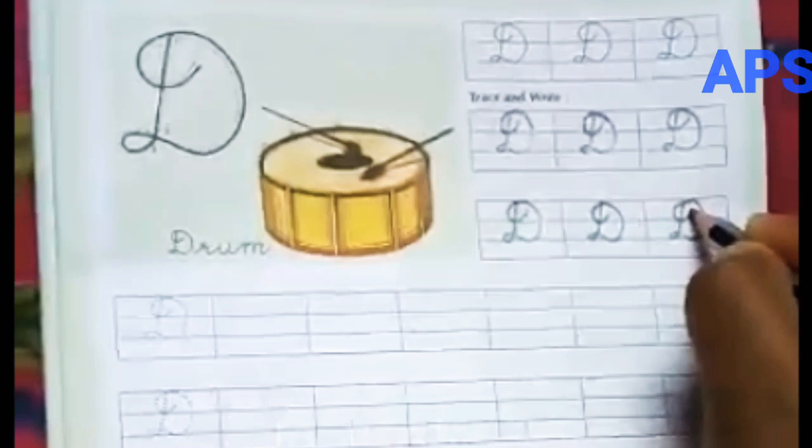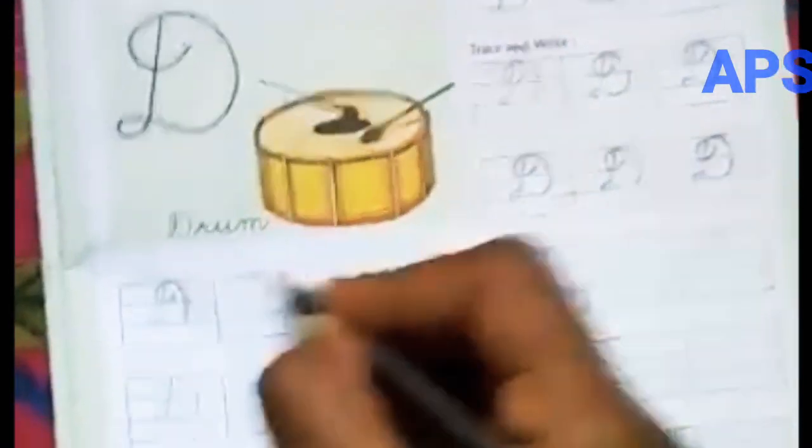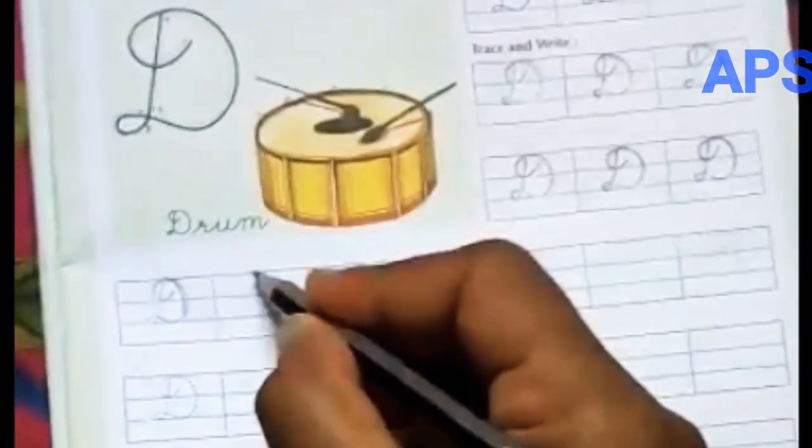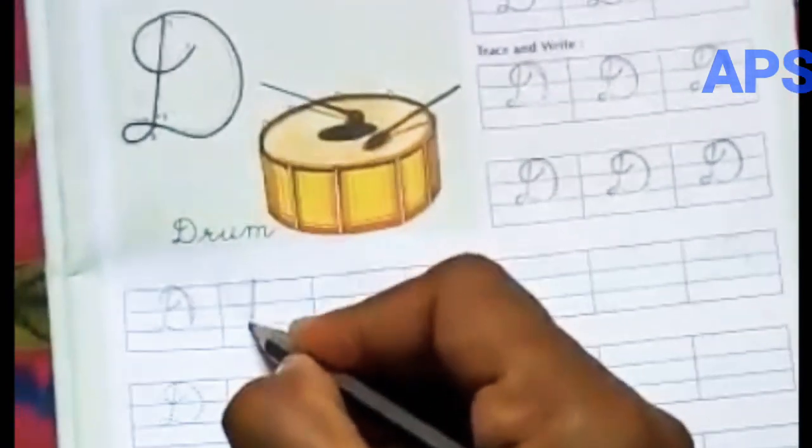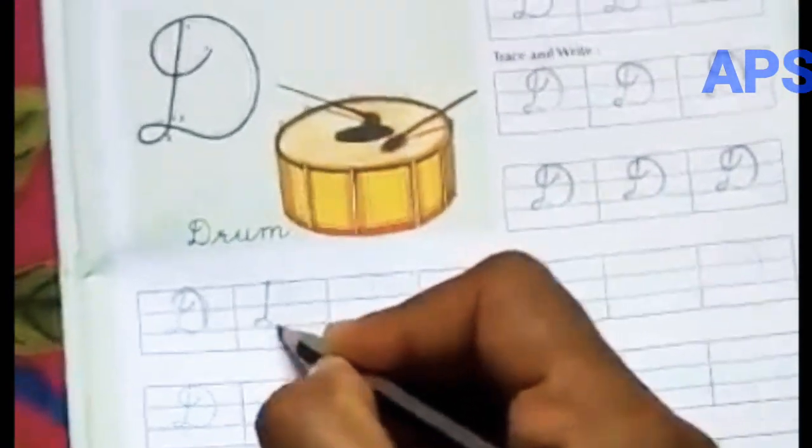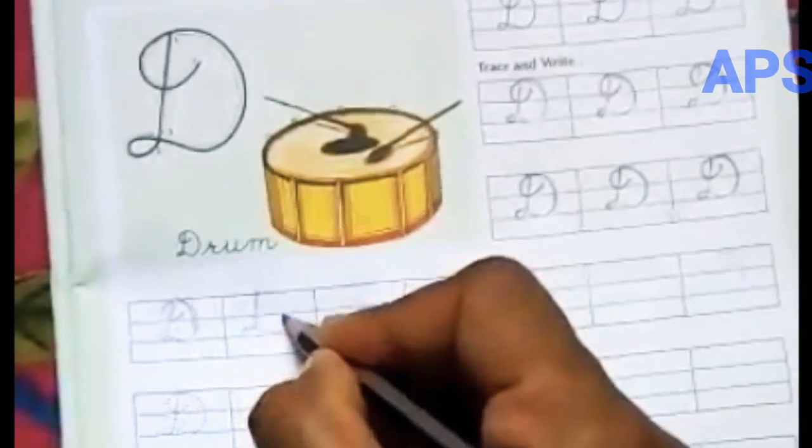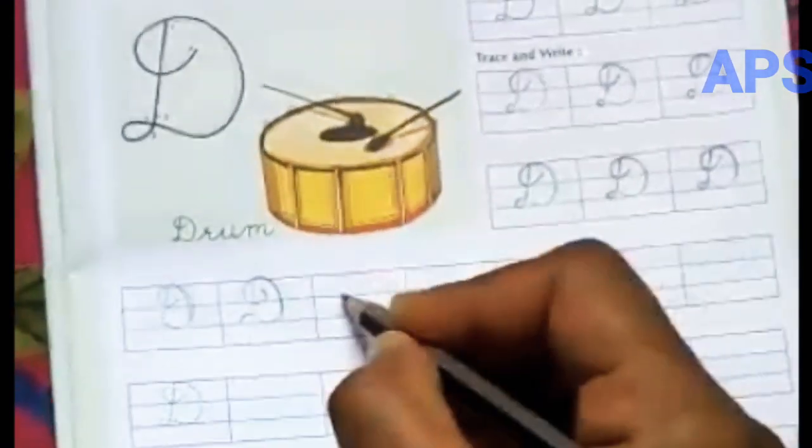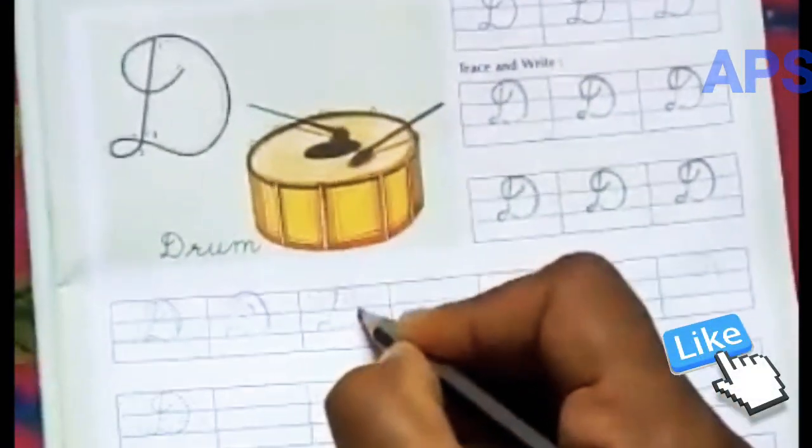D for drum. Here also the same process. 1, 2, 3, 4. So starts from the first line to third line. Turn, does the third line, goes up, and back. Here also the same.